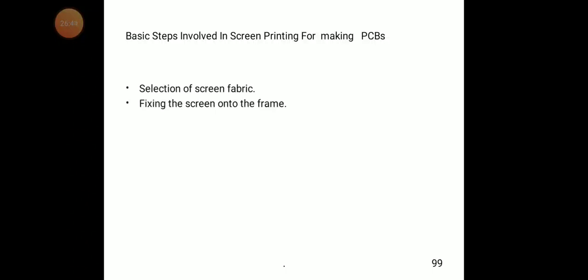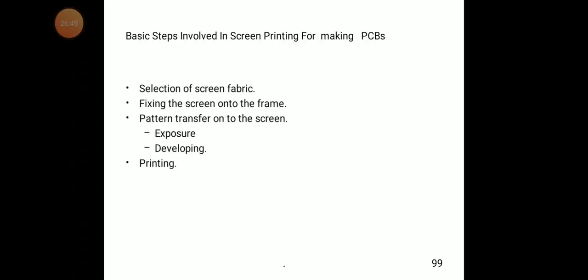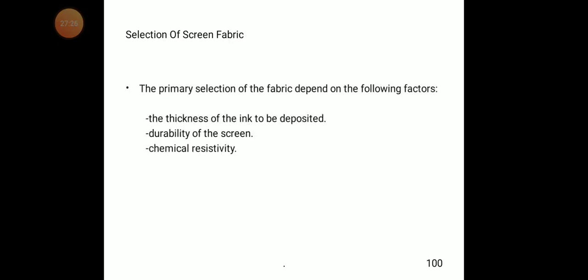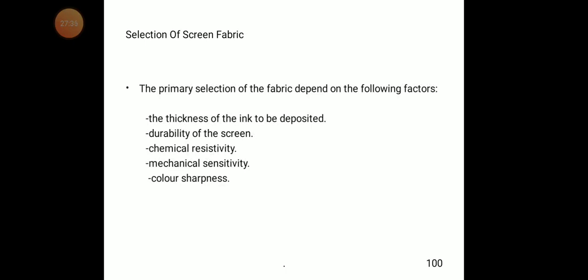The basic steps involved in screen printing for making PCBs are: selection of a screen fabric, fixing the screen onto the frame, pattern transfer onto the screen, exposure method, developing method, printing, and cleaning the screen fabric. The primary factors for fabric selection are: thickness of ink to be deposited, durability of the screen, chemical resistivity, mechanical sensitivity, and color sharpness.